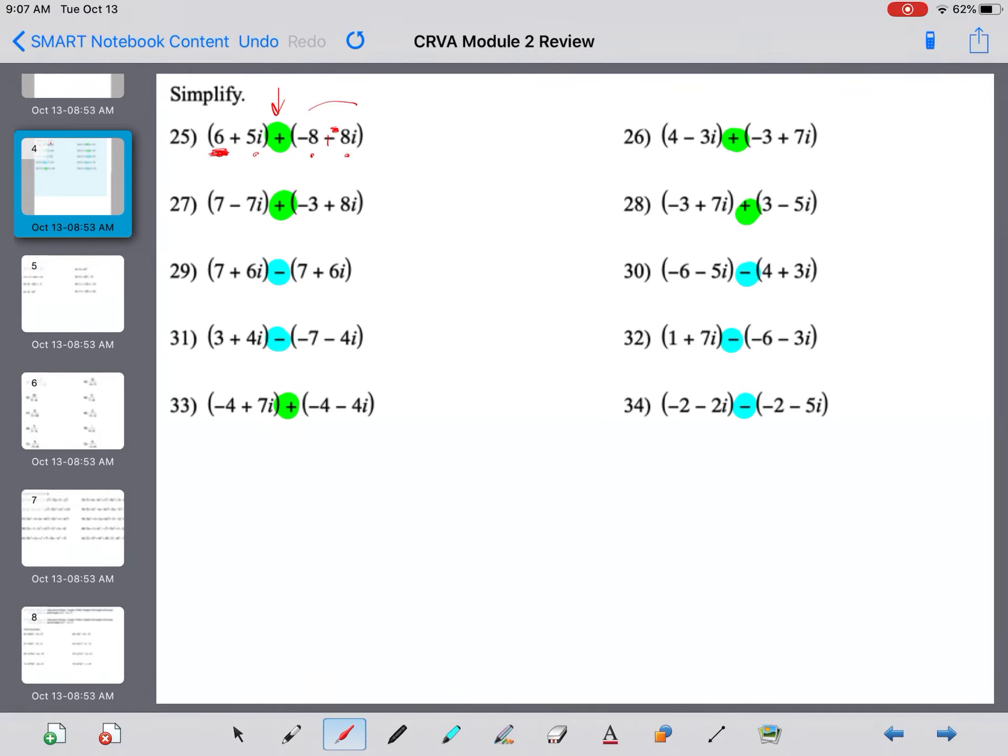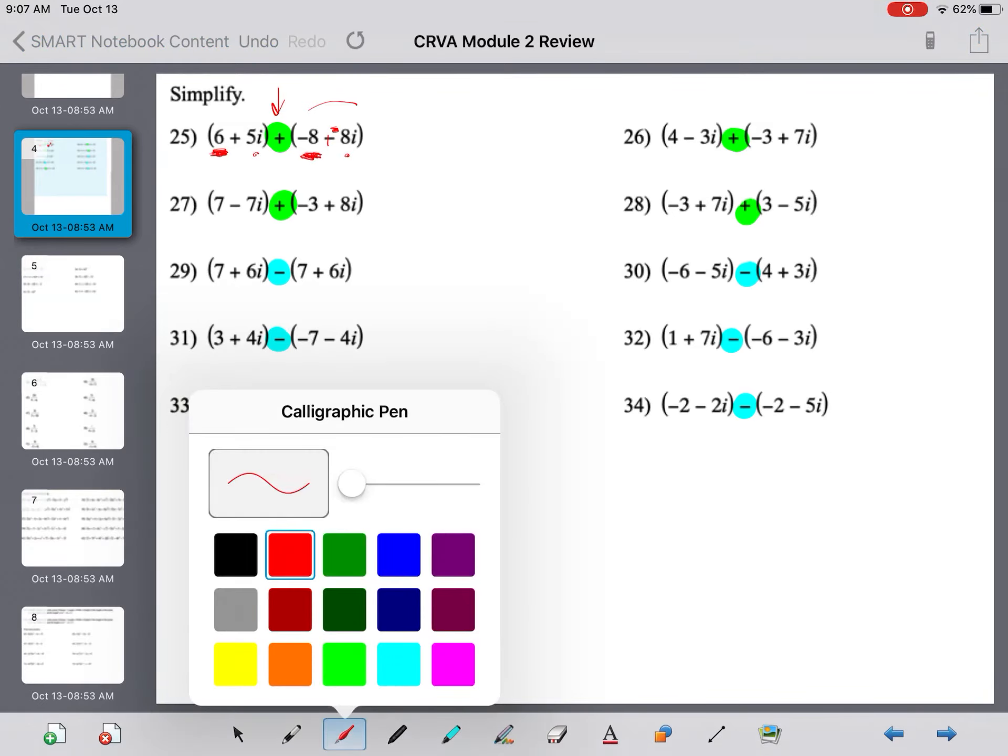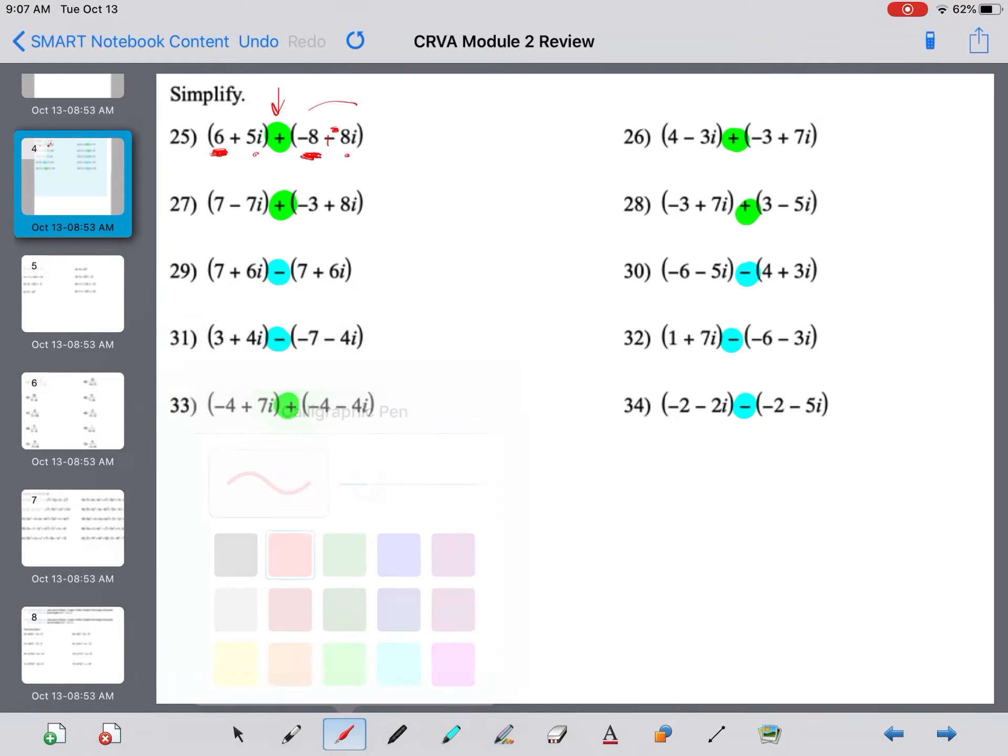However, I can only add like terms, and imaginaries and reals cannot be combined together. But here, I've underlined two real numbers, and so I can combine those together. So, I have 6 plus negative 8, which is negative 2. And then, I can combine imaginary numbers. I have 5i and negative 8i, which makes negative 3i, or minus 3i.